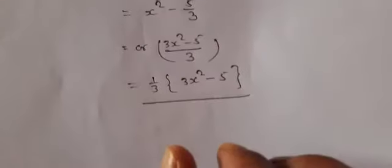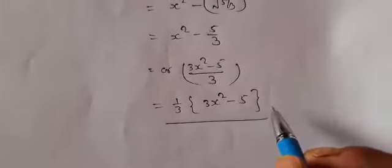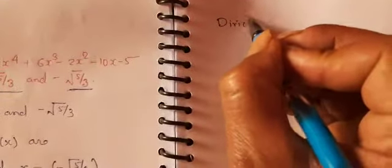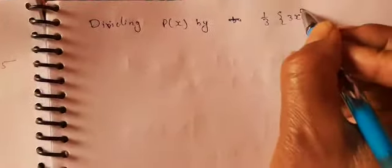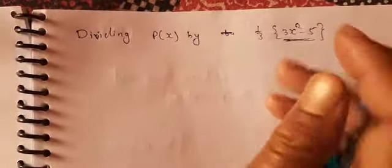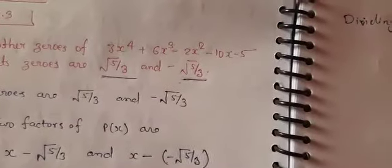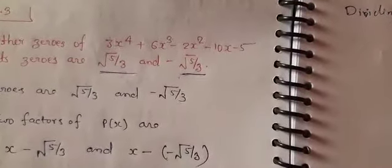Similarly, we have to find the product of the other two factors, so the given polynomial should be divided by this result to obtain the product of the other two factors. We will divide the given polynomial p(x) by (3x² − 5), leaving the (1/3) aside. The given polynomial is 3x⁴ + 6x³ − 2x² − 10x − 5.